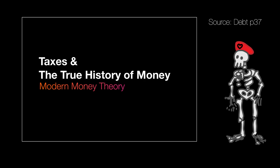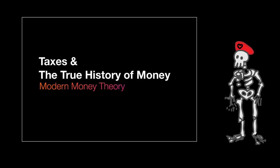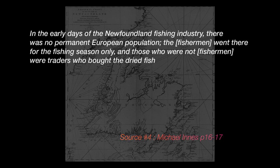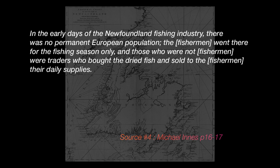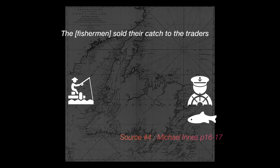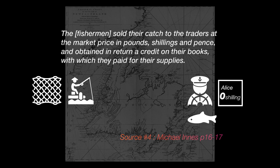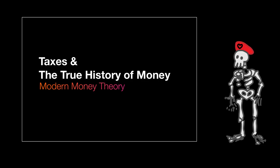They were much more precise in how they calculated how much they owed each other, though. All of these people were very familiar with money already, and were even using money as a unit of account. In reality, these people would just pay debts in something that everyone else seemed to have or need — the commodity wasn't actually acting as money; it was just something everyone accepted as payment for debts that were tallied in money. In the early days of the Newfoundland fishing industry, there was no permanent European population. The fishermen went there for the fishing season only, and those who were not fishermen were traders who bought the dried fish and sold the fishermen their daily supplies. The fishermen sold their catch to the traders at the market price in pounds, shillings, and pence, and obtained in return a credit on their books, with which they paid for their supplies.